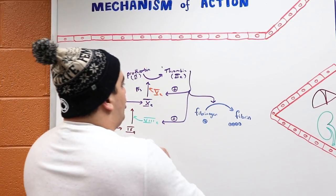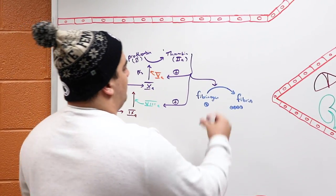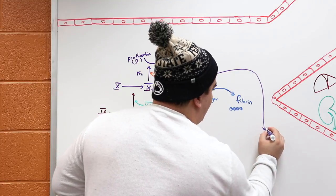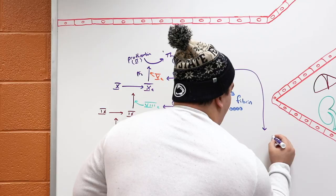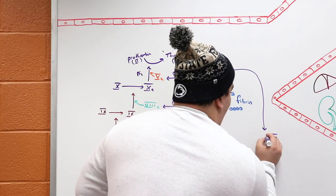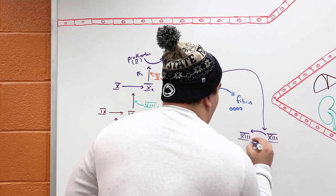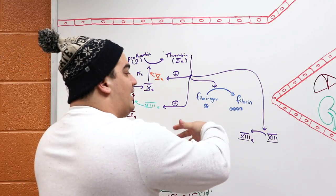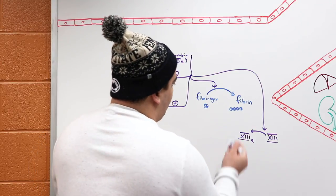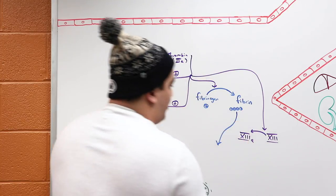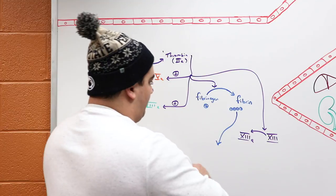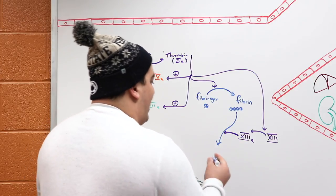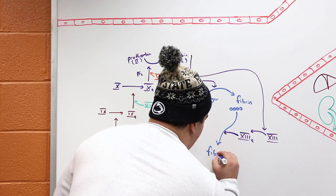Once we have fibrin, thrombin also activates another enzyme called factor 13. Factor 13 in its activated form takes the fibrin molecules and combines them into a nice cross-linked mesh. The fibrin molecules form a beautiful fibrin mesh that stabilizes the platelet plug.